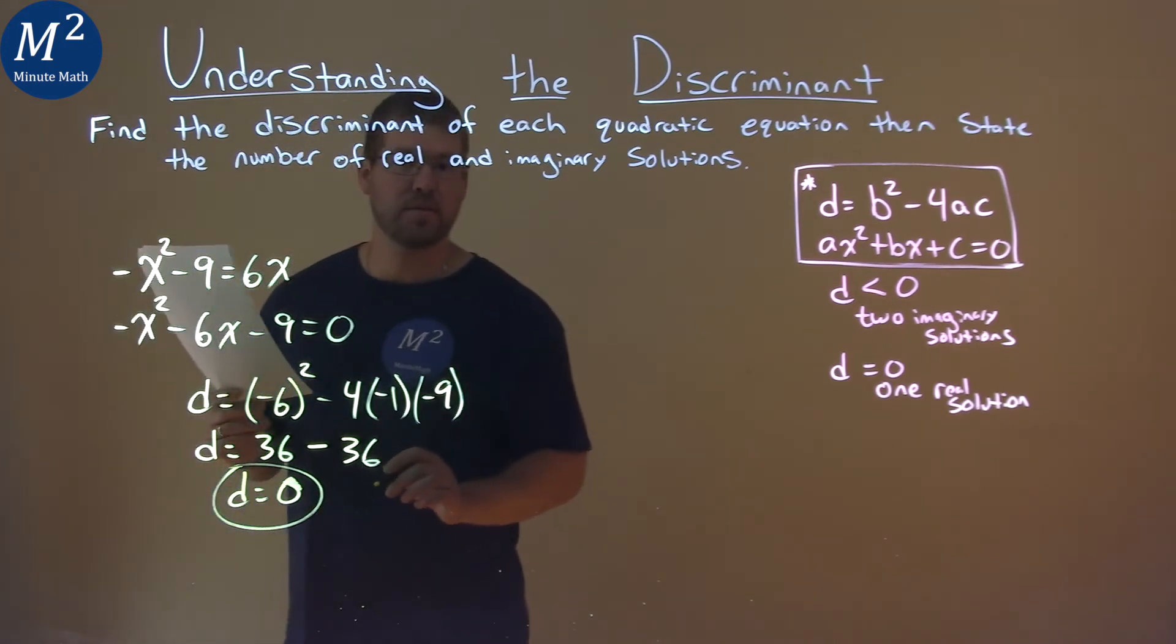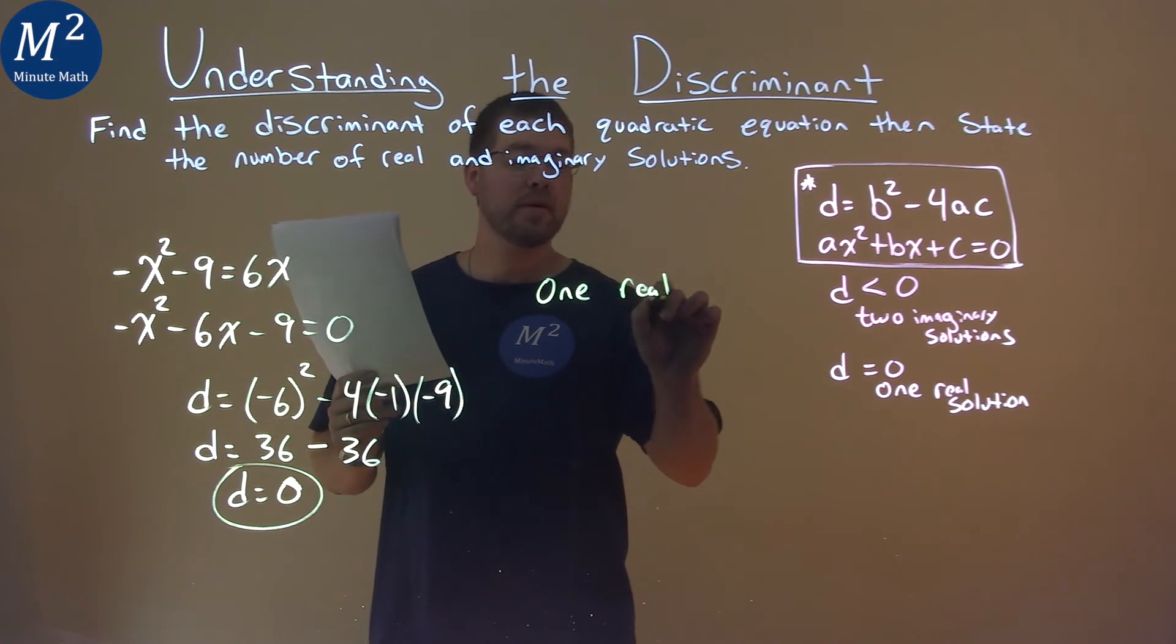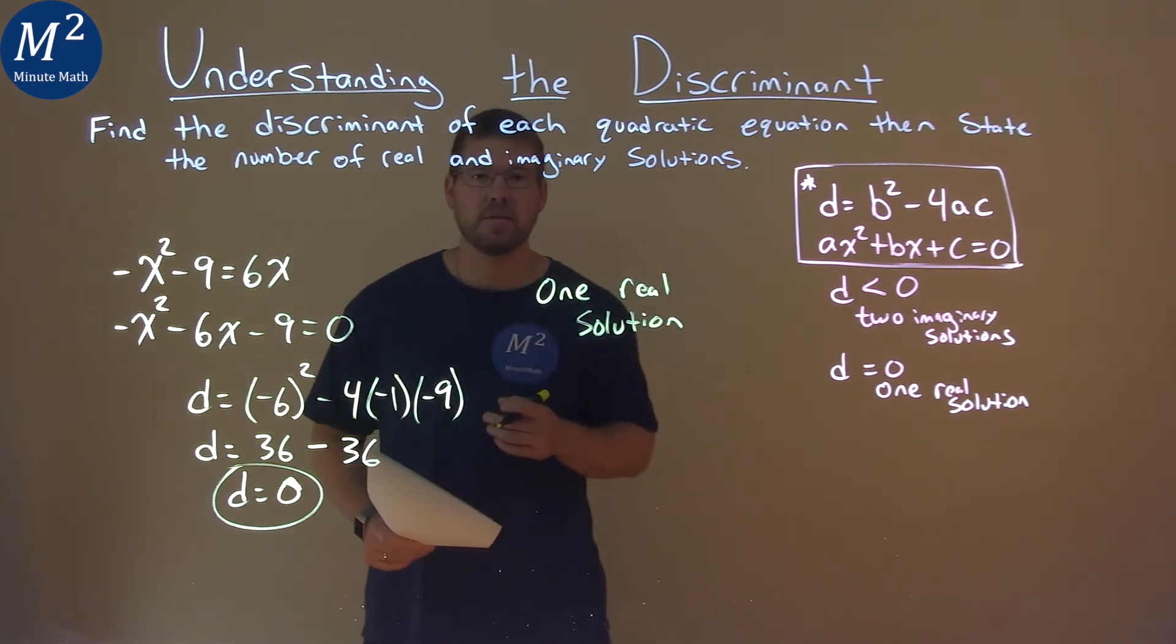So what does that tell us? Well, our discriminant is equal to 0, so that means we have one real solution, and that is our final answer.